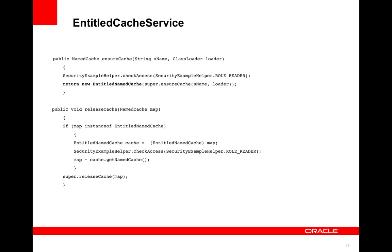I can control who gets a cache. It's doing this check access, so I can decide if this person is allowed to get a cache or is allowed to release a cache. It's simplified compared to the old example. This ensure cache is getting a cache reference and then instantiating an entitled named cache wrapper from that cache reference, so the wrapper you're returning is entitled named cache.